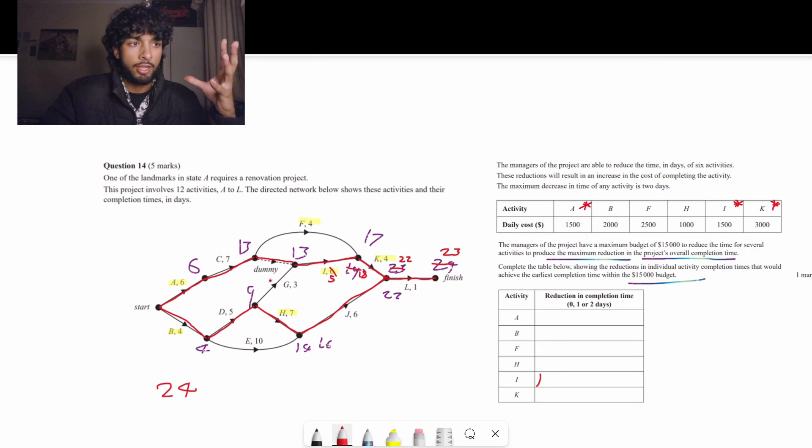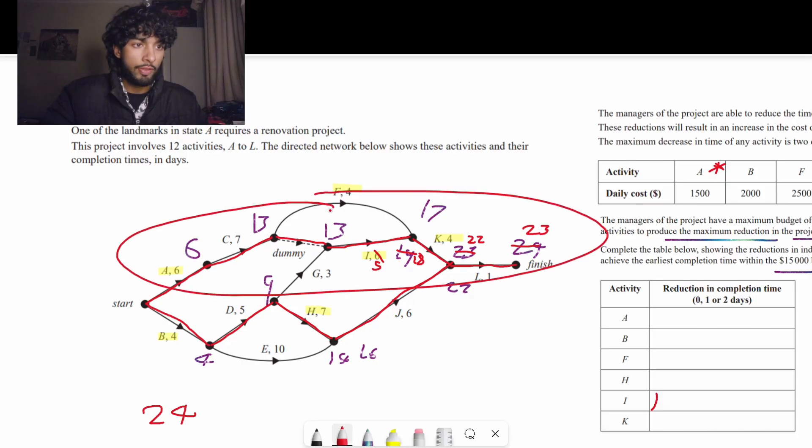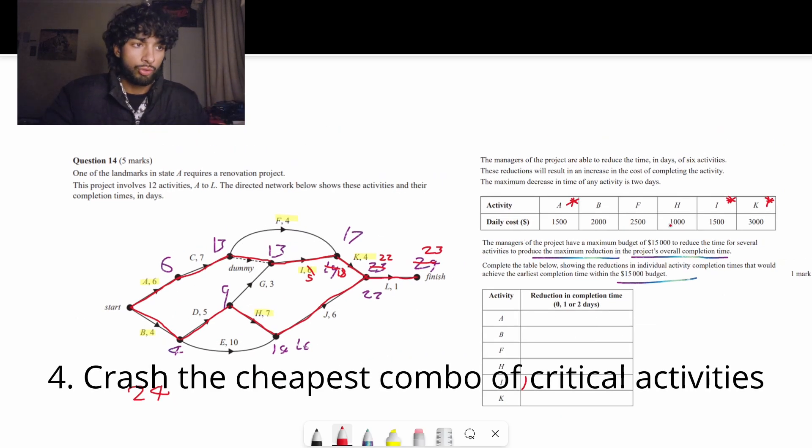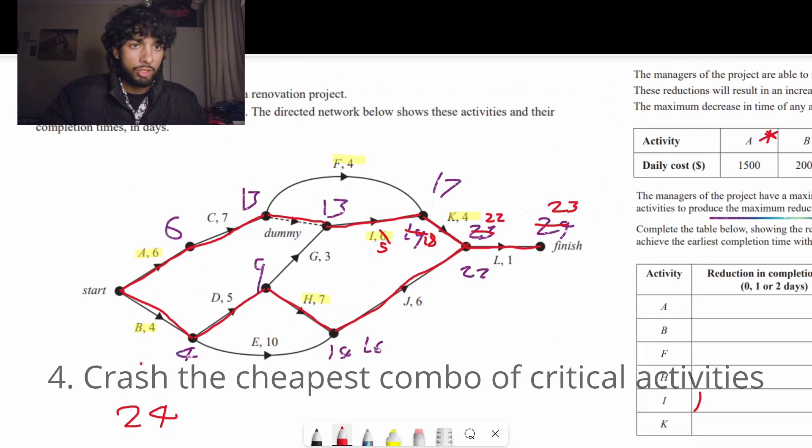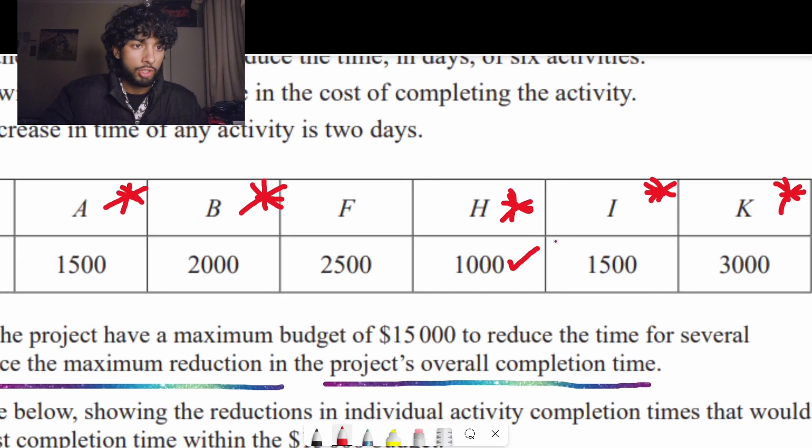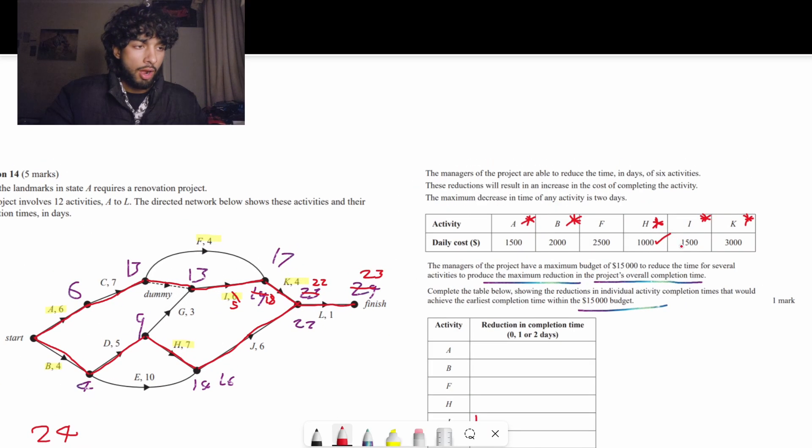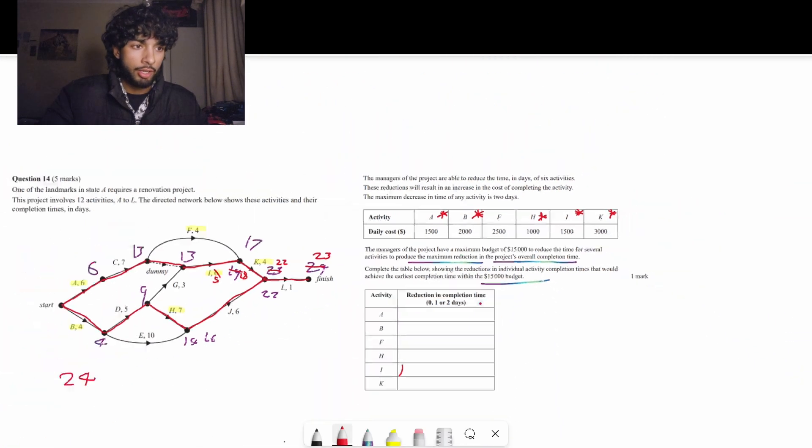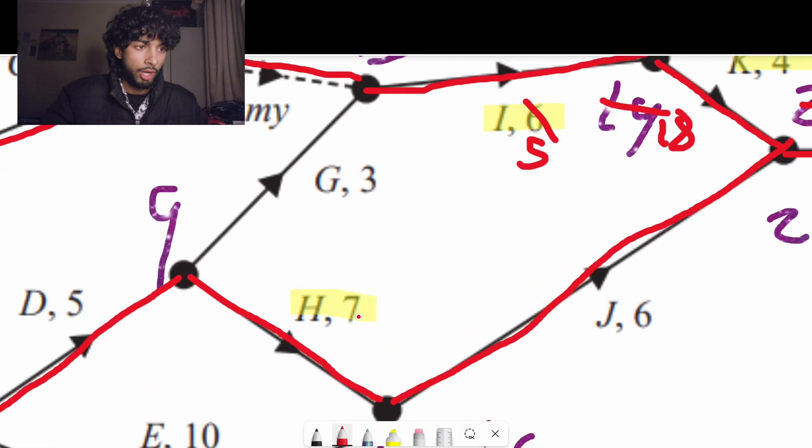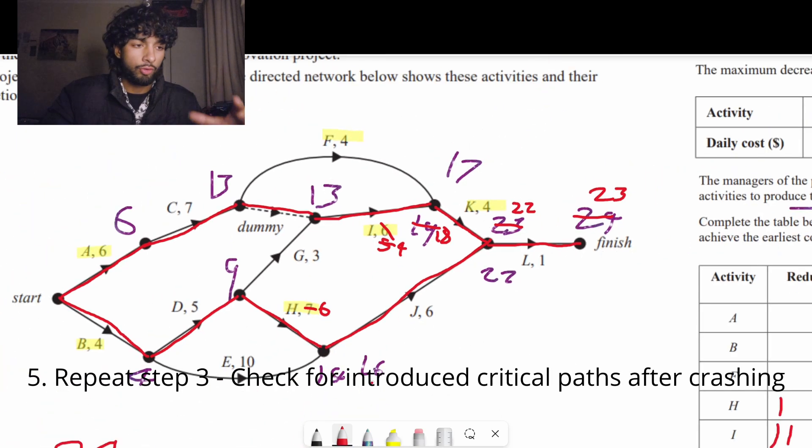What this essentially means is that we can't crash one thing at a time. We have to crash two things. So we have to crash one thing on this pathway at the top and then one thing on this bottom pathway as well. We're going to choose the cheapest combination of those two. Bottom, we have b and h. Cheapest option is h. And then for the top pathway, we're just going to roll with i again.